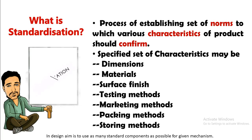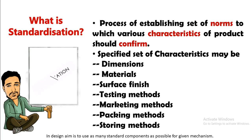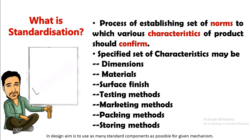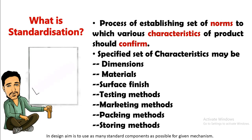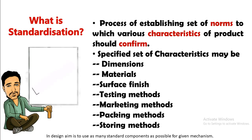Standardization is the process of establishing a set of norms to which various characteristics of a product should conform. These characteristics include dimensions, materials, surface finish, testing methods, marketing methods, packing methods, and storing methods — all should conform to the established set of norms. In design, the aim is to use as many standard components as possible for a given mechanism.